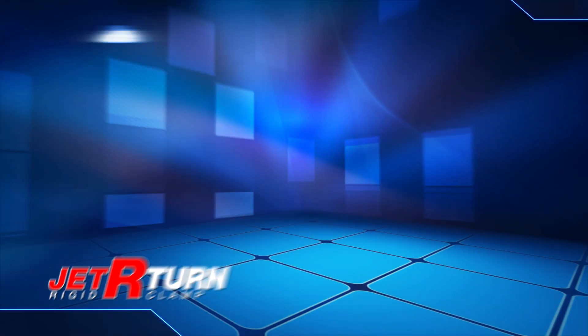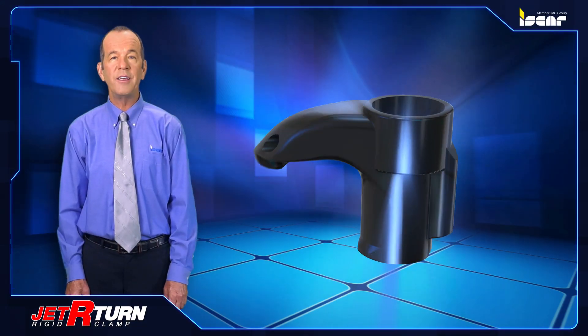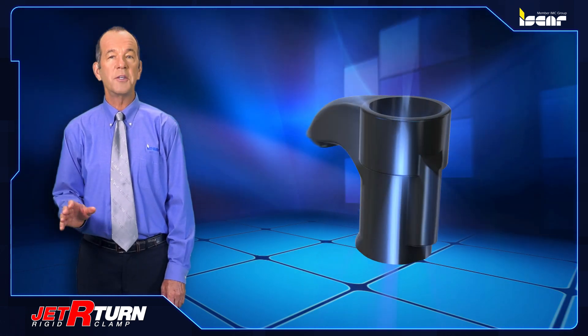Jet R-Turn. ISCAR is expanding the Jet Cut line by adding turning tools fitted with the Jet R-Turn hollow rigid clamp, which serves also as a coolant nozzle.